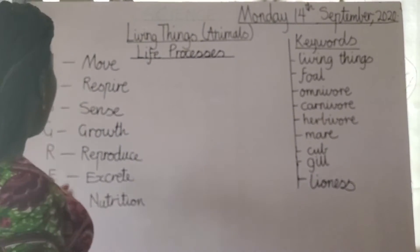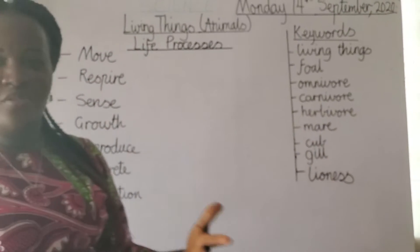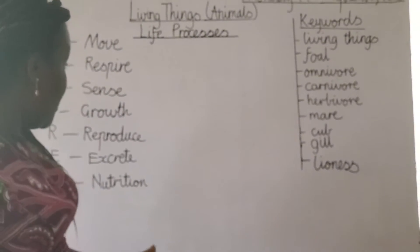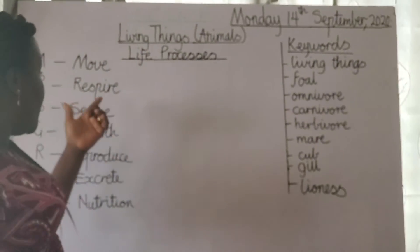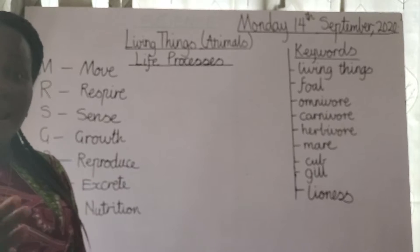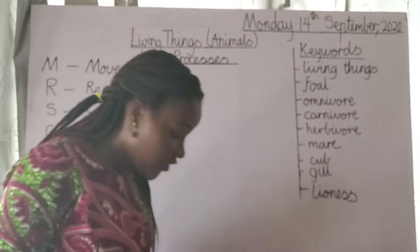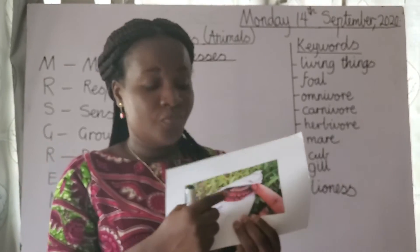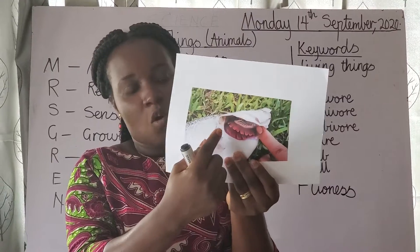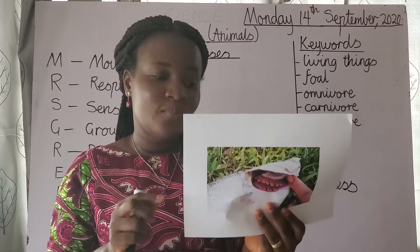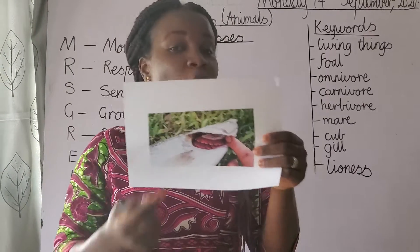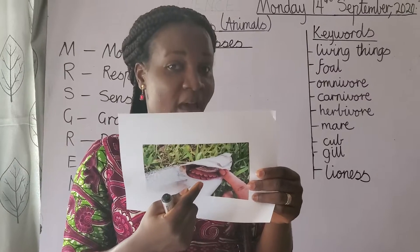Animals also breathe — in and out — just like you and I. That also tells us that an animal is a living thing. Some animals breathe through their lungs. Others, such as fish, breathe through their gills. The pink thing you see here is the gill of the fish. Next time your mummy brings fish from the market, let her show you where the gills are.